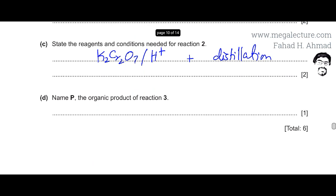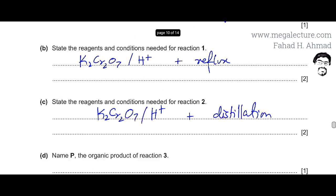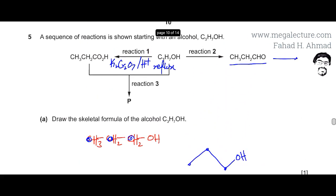The next part is we need to name the organic product P. That is the product of reaction 3. Let's go back and have a look at reaction 3. So there's propanol and there's propanoic acid and they connect together - alcohols combine with carboxylic acids to form esters.